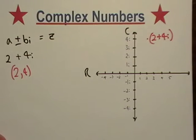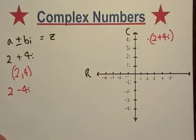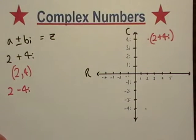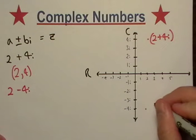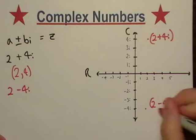And this would be 2 plus 4i. And if it was, let's say that was 2 minus 4i, I would do the same thing. I go 2, and I would go down to negative 4i right there. So this complex number would be 2 minus 4i.